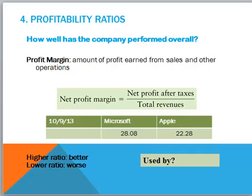Profitability ratios give us an indication of how well the company has performed overall. These are all very important ratios to management, investors, banks, and analysts — basically to everyone. The profit margin shows the amount of profit earned from sales and other operations, and is very dependent on the industry. Microsoft and Apple have pretty high profit margins, with Microsoft at 28% versus Apple at 22%.